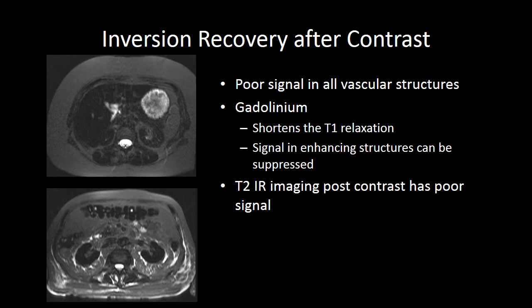Here are some examples of what can happen after contrast. These are T2-weighted images after gadolinium administration. The gadolinium causes such rapid relaxation that it's very difficult to get much contrast differentiation because the T1 relaxation of water is going to approach that of fat. Also, enhancing structures may be suppressed and won't be bright like you would expect on a T1-weighted image if the T1 relaxation has shortened similar to that of fat. So again, we don't really want to use inversion recovery sequences after contrast administration.